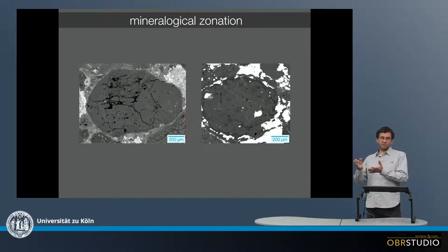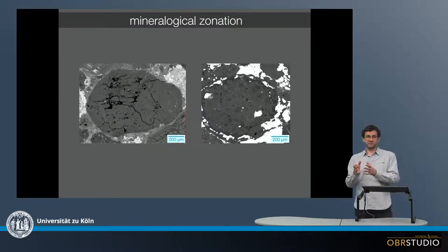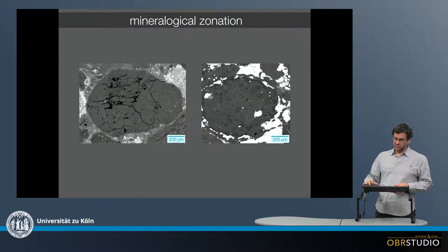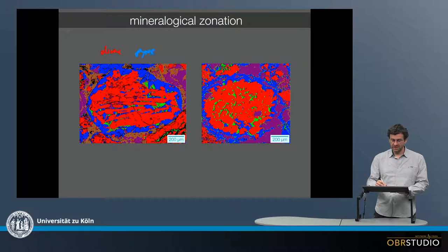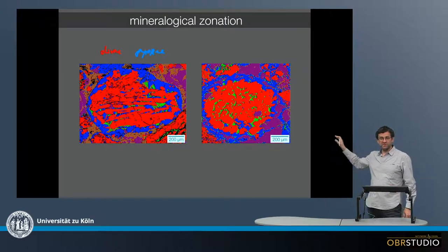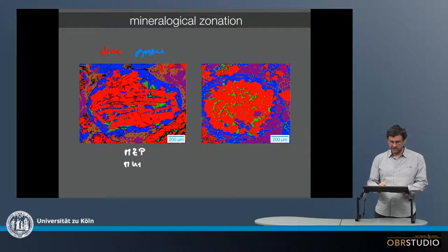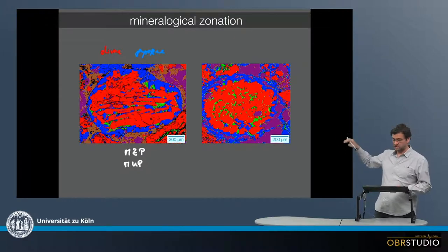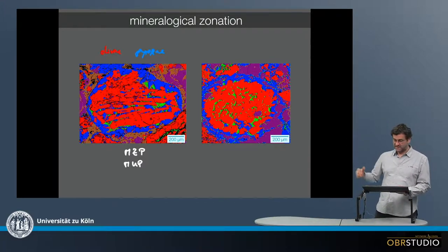All the porphyritic chondrules are often mineralogically zoned as indicated earlier, but this is not necessarily easy to see. This is why we use phase maps in which the individual minerals are color-coded — in this case olivine is red and pyroxene is blue. With this color scheme, the mineralogical zonation is very easy to see. We call these the mineralogically zoned porphyritic chondrules, or the mineralogically unzoned porphyritic chondrules. They are quite abundant in carbonaceous chondrites but less so in other classes.